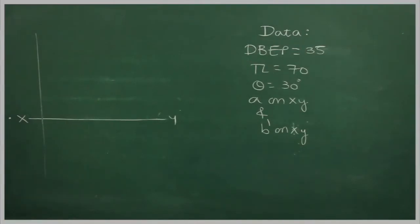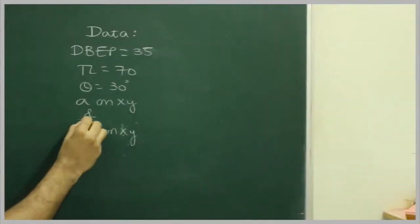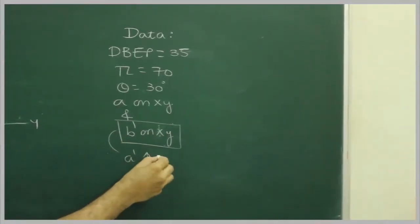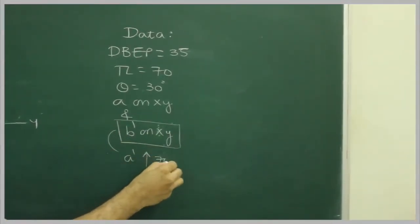Now if you see, over here we have given angle theta, but we don't have any information regarding A'. So what we will do, instead of B' on x-y line, we will assume A' 70mm above x.